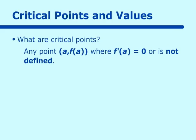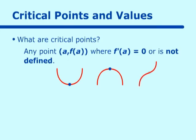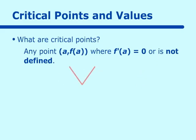We know f prime of a is equal to zero when a graph looks like this and you have that point, or like this and you have that point, or even like an x-cubed graph. Where it's not defined could be points like on the absolute value function or on what I call the butterfly function — some point where your derivative is not defined.